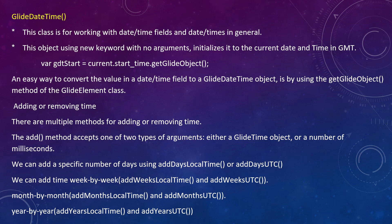Previously, if we had a field containing only a string value, we needed to convert it into date and time. We can do that by using getGlideObject — that API converts string values into a particular date or time. Adding or removing time is also done using GlideDateTime.